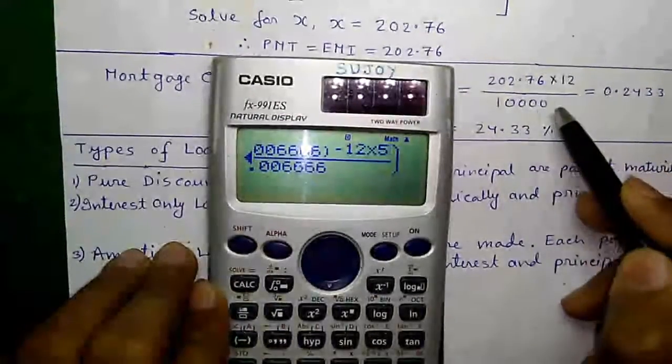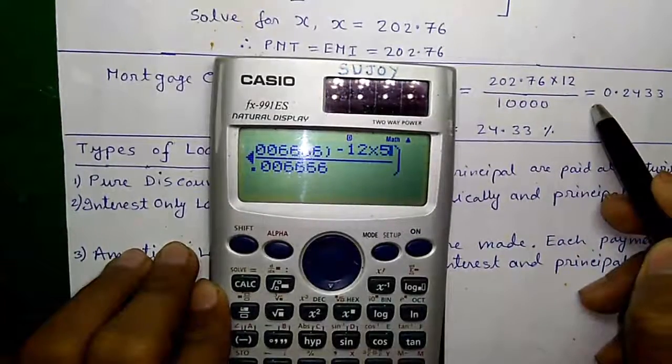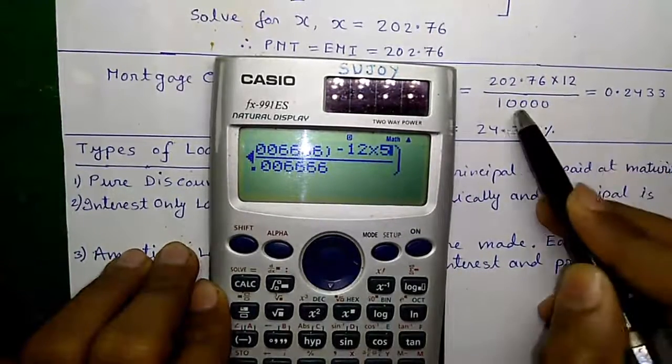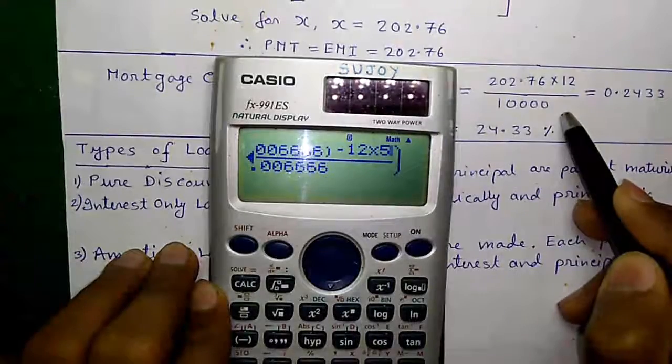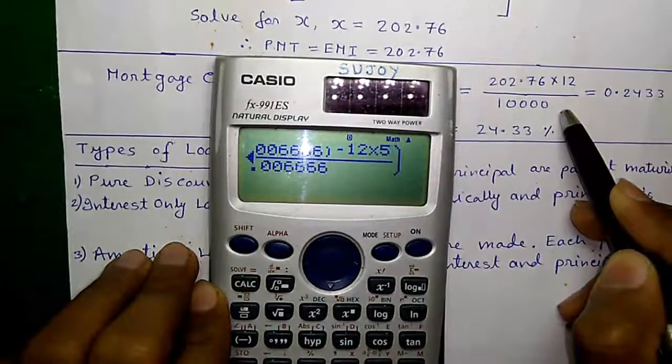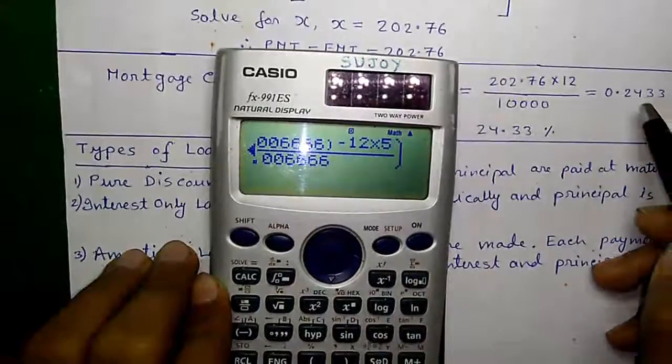So the trick is to take the loan for longer duration but close the loan or prepay the loan by paying some additional amount every month or every year. Let me show you that mathematically.